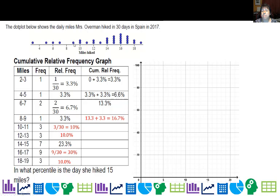That means that by mile nine, 16.7% of my hikes are at or below that value. Well, let's go ahead and look at the dot plot. So there's one, two, three, four, five.